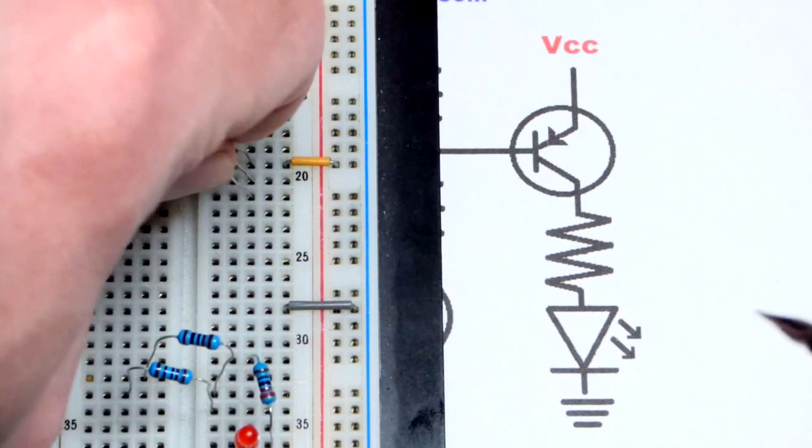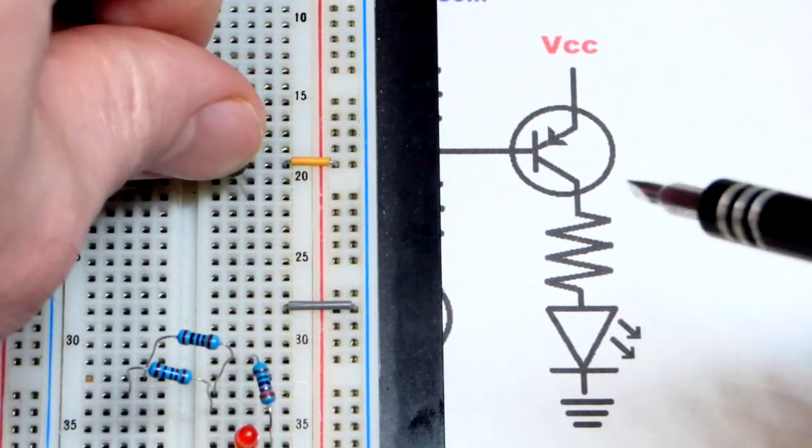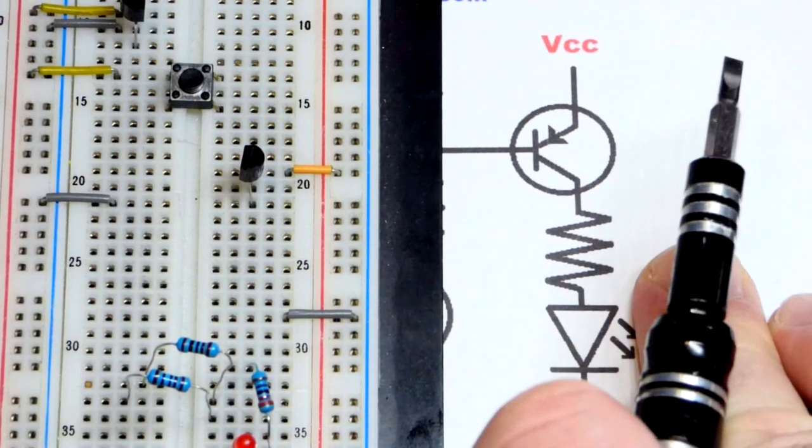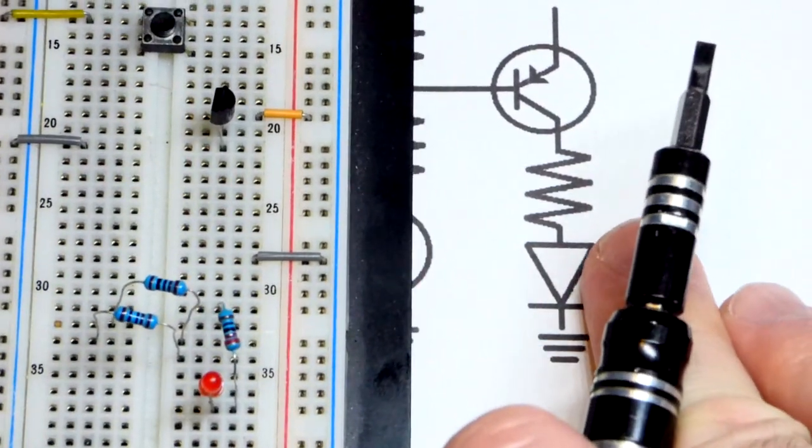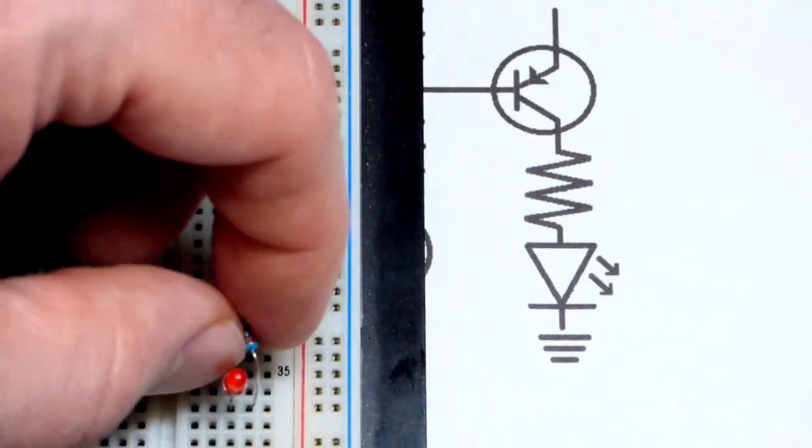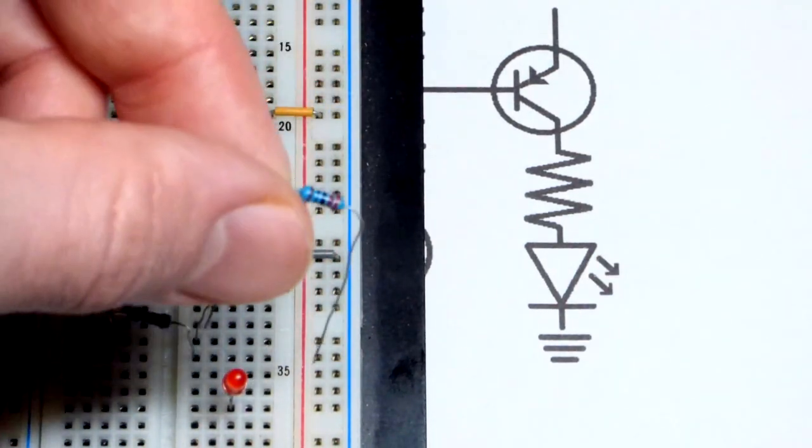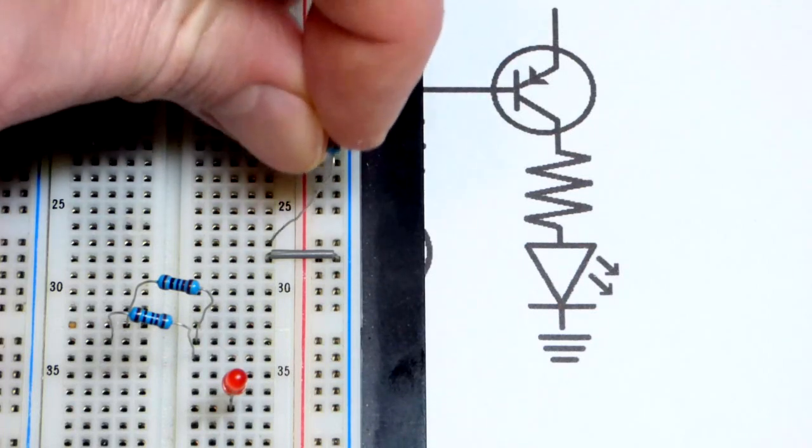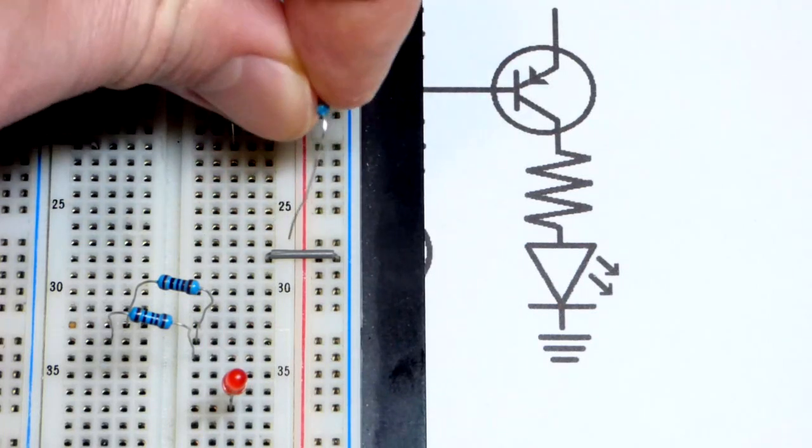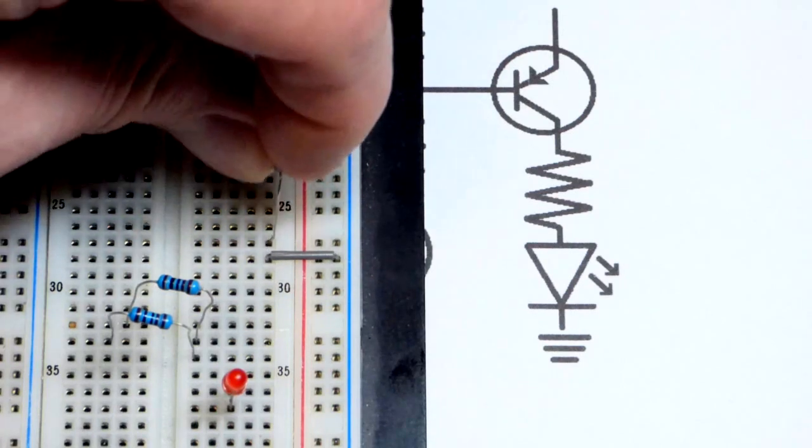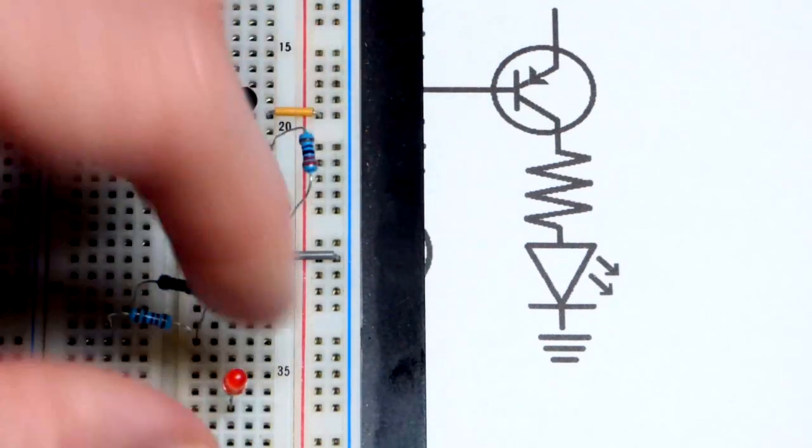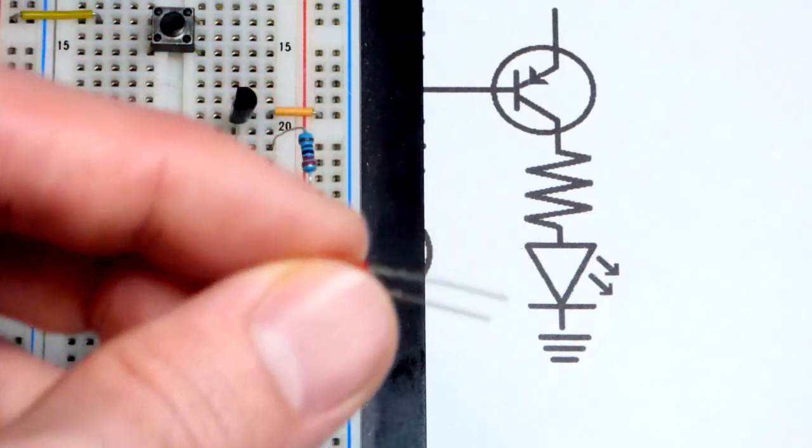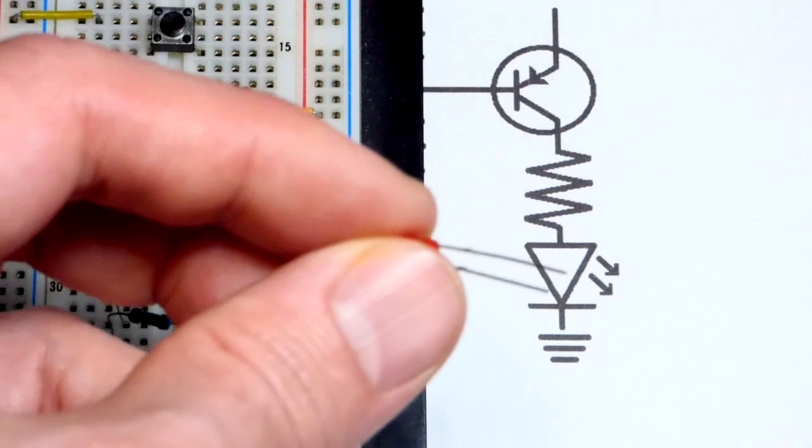Now the collector - we have our load, so we're going to protect an LED with a resistor. We're working with 5 volts, so this is a 220 ohm resistor. I'll put that from the collector to one spot above the negative rail right there. It's one spot because we're going to take an LED.